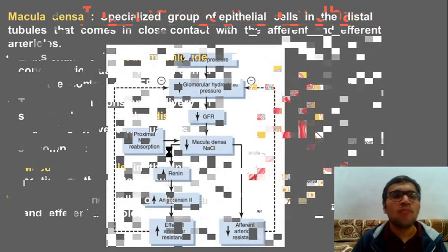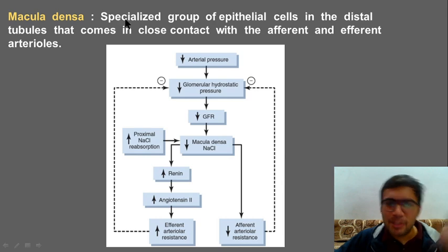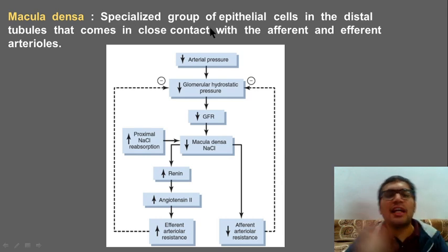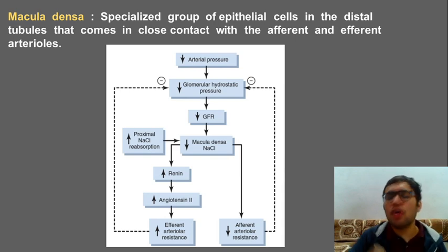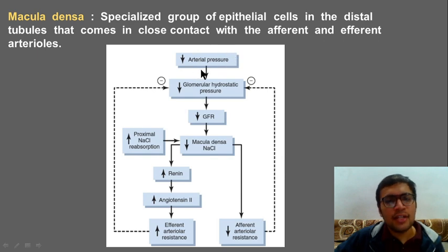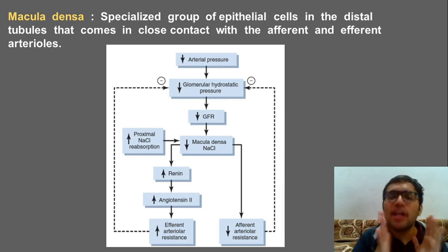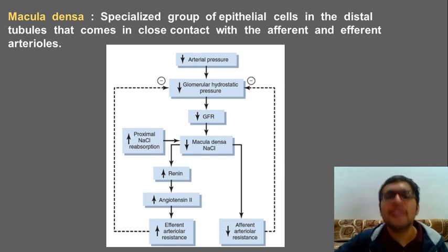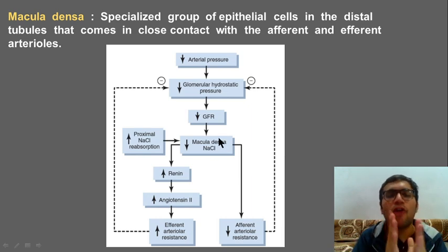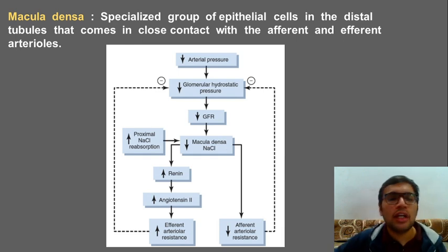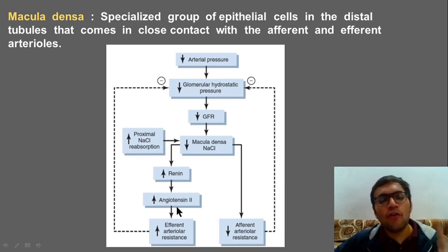Macula densa are a specialized group of epithelial cells in the distal tubule that come in close contact with afferent and efferent arterioles. Case one: arterial pressure has decreased, leading to a fall in glomerular hydrostatic pressure, which decrements GFR. So NaCl concentration reaching macula densa decreases. This triggers two mechanisms — first, it leads to increased renin release, which increases angiotensin 2.